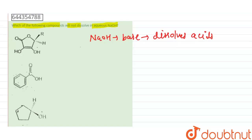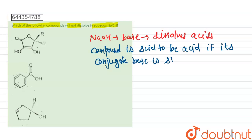Now, we know that a compound is said to be acid if its conjugate base is stable.